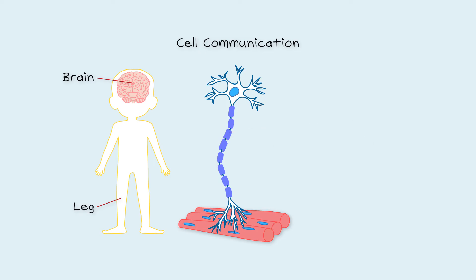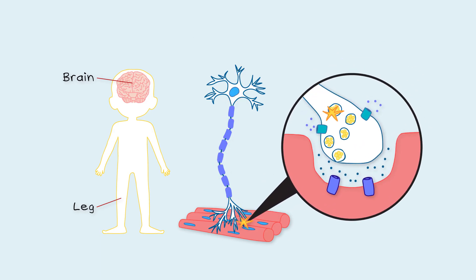For this to happen, a message in the form of an electrical impulse travels along the axon. When it reaches the very end, it activates channels that let calcium into the cell. This triggers the release of a neurotransmitter. This neurotransmitter then travels across a small gap from the nerve to the muscle cell and binds to a receptor that lets sodium flow into the muscle. This gives the signal for the muscle cells to contract and allows us to move our leg.